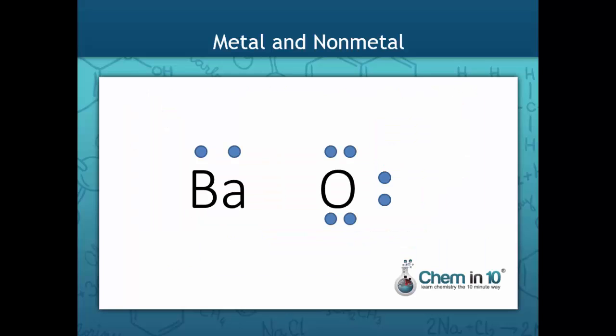In this example, barium transfers its two valence electrons to oxygen. Barium ends up with a plus two charge because it lost two electrons, and oxygen ends up with a minus two charge because it gains two electrons.